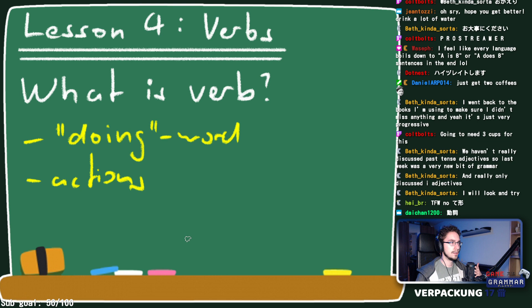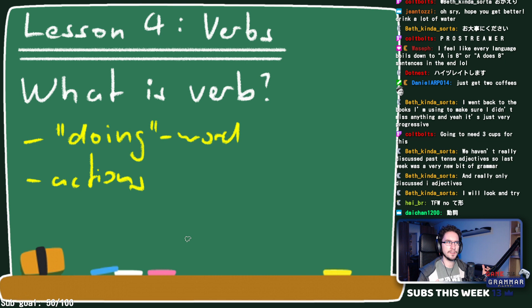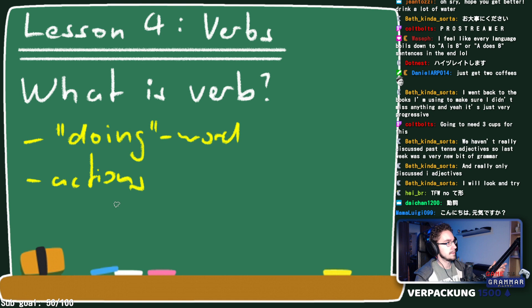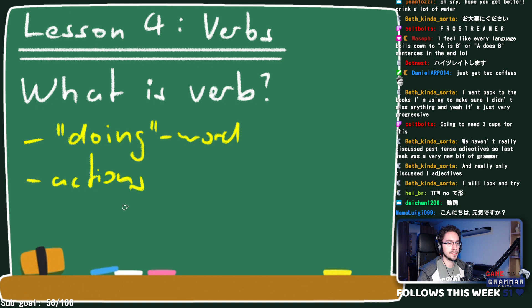In Japanese especially, the verb is very important. There's a well-known point — Tae Kim mentions it in his guide — that the most basic Japanese sentence is just a verb, just a predicate. So if the minimum unit of a sentence is a verb, the verb is clearly pretty important.